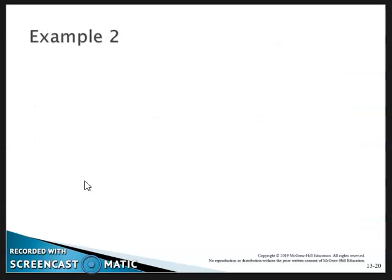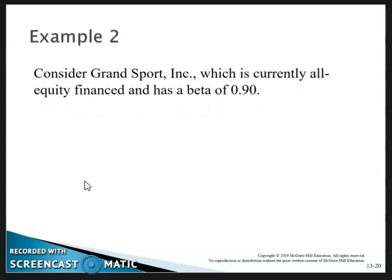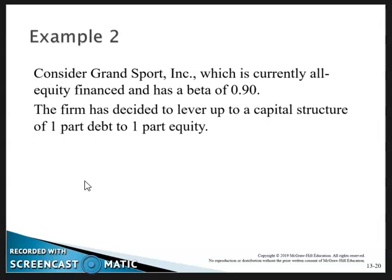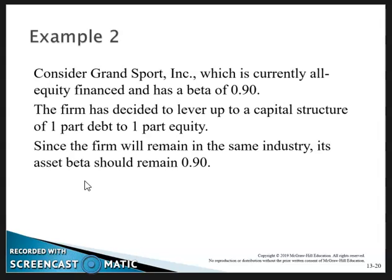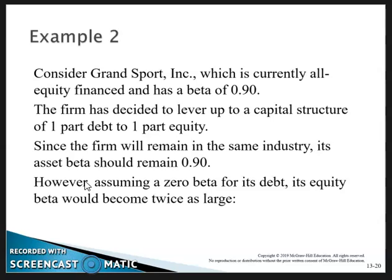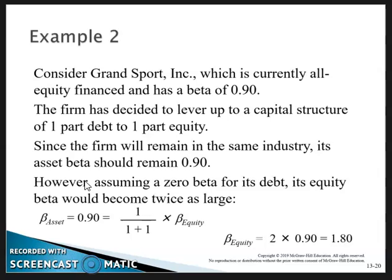Example: Grant Support Incorporated is a currently all-equity financed firm with a beta of 0.9. The firm has decided to lever up the capital structure to one part debt to one part equity — a 50/50 capital structure. Since the firm remains in the same industry, its asset beta stays at 0.9. Assuming zero beta debt, the equity beta will double. So: 0.9 equals 0.5 multiplied by the equity beta, giving us an equity beta of 1.8.